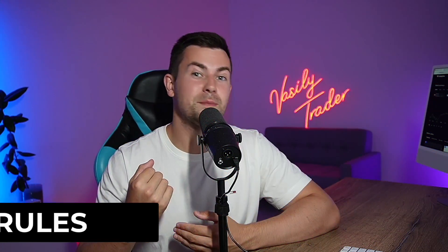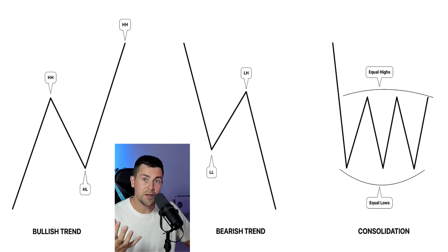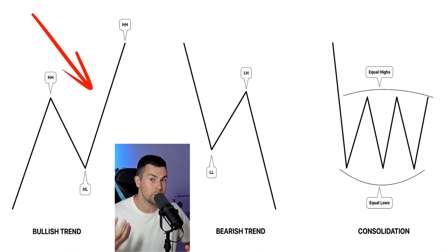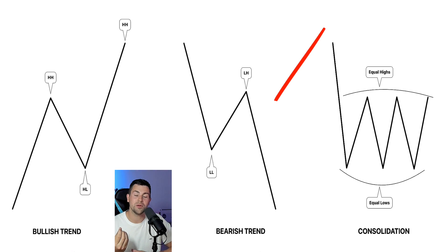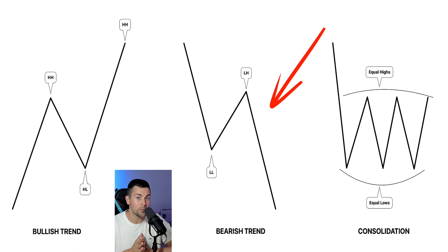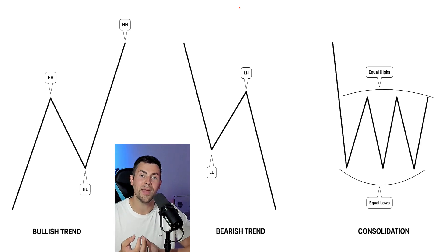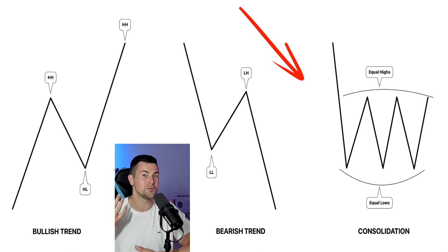Let me remind you the basic rules of market trend analysis in SMC trading. We say that the market trend is bullish if there are at least two bullish impulses with two higher highs and a retracement leg between them with a higher low. We say that the market trend is bearish if there are two bearish impulses with two lower lows and a retracement leg between them with a lower high. If the conditions for a bullish or bearish trend are not met, we say that the market is consolidating.